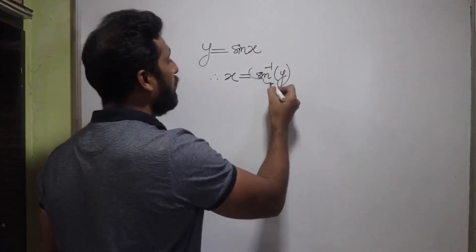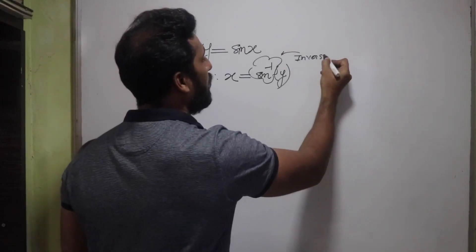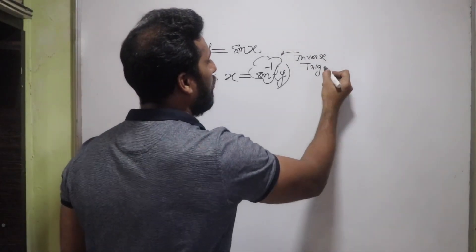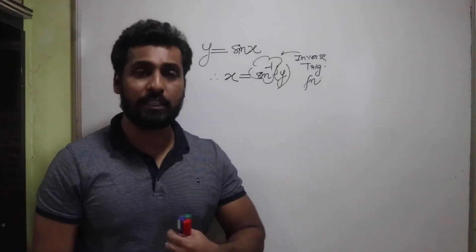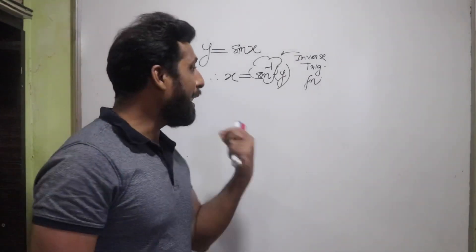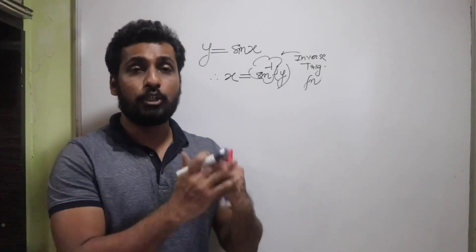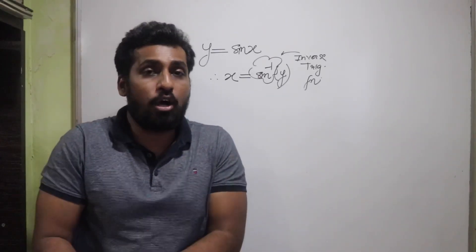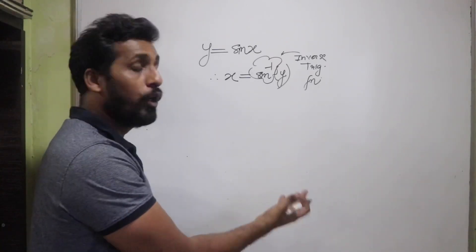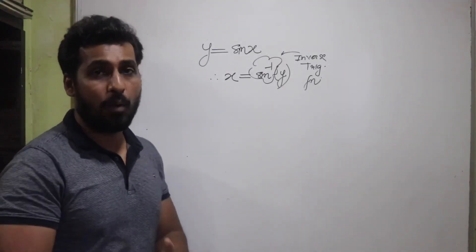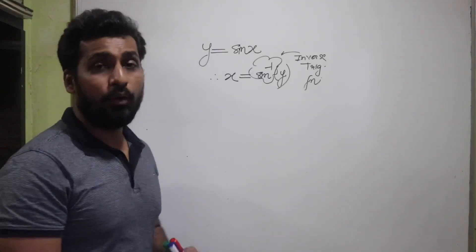This sin⁻¹ is called an inverse trigonometric function. The same concept is applicable for all other trigonometric functions — tan, cot, cos, sec, cosec. The ratio goes to the other side and becomes an inverse function.